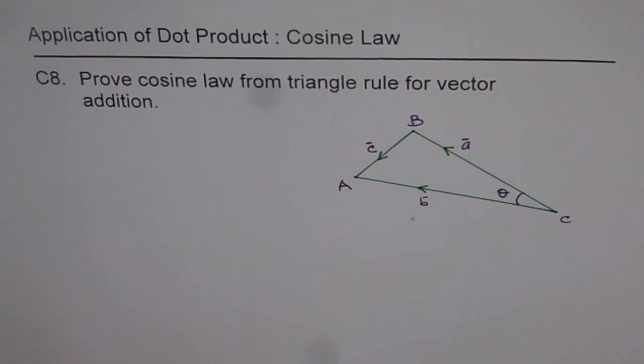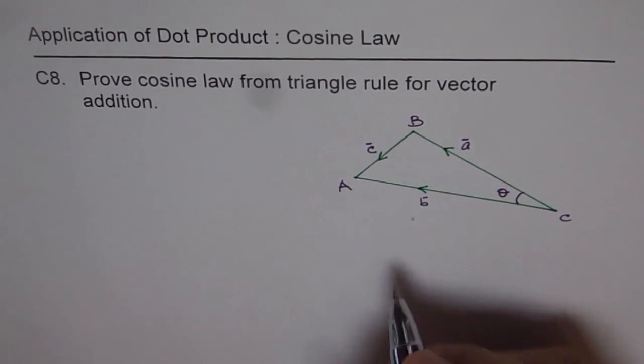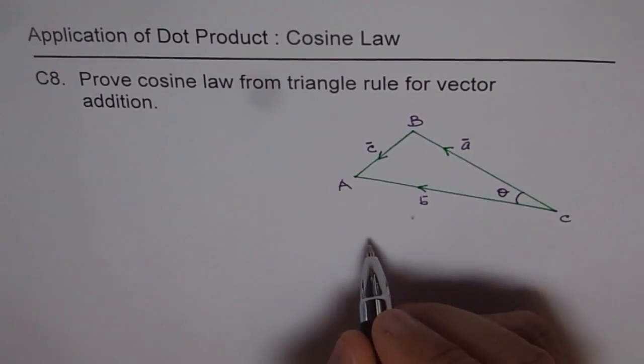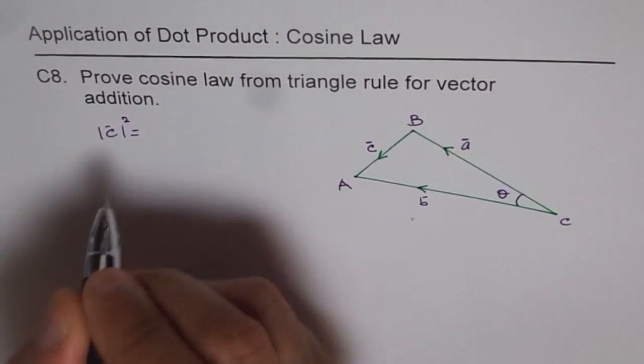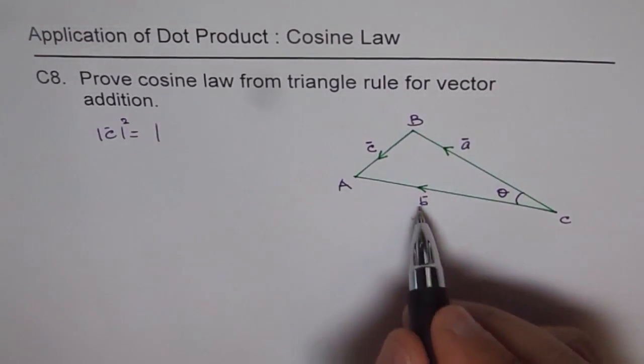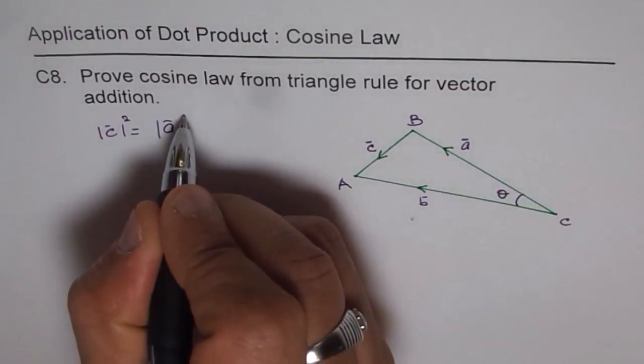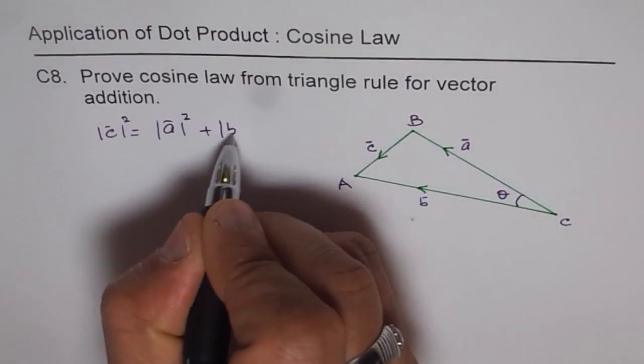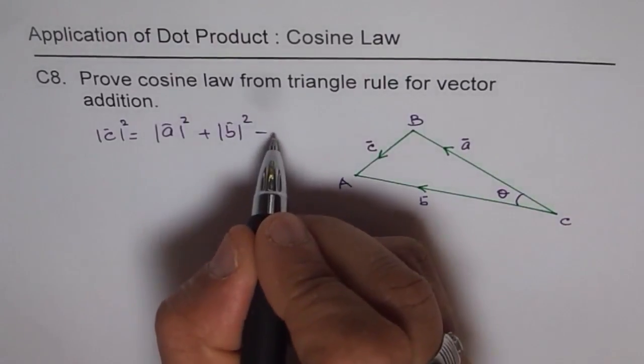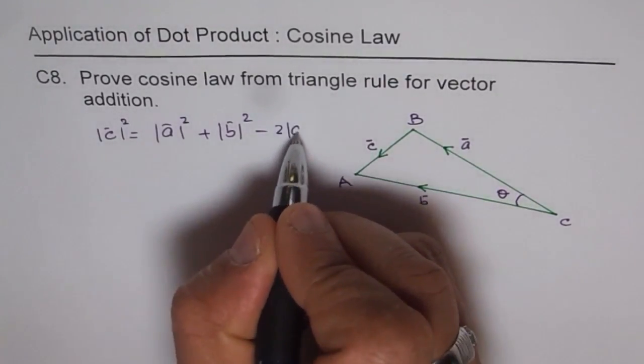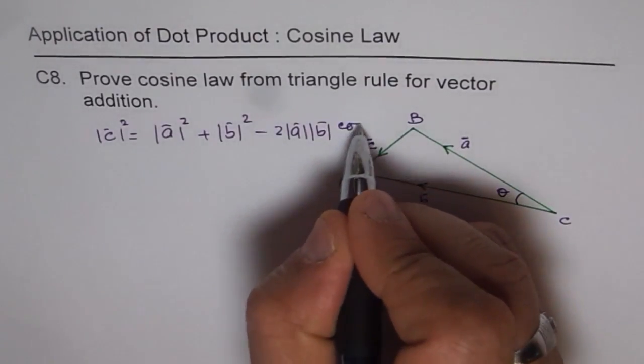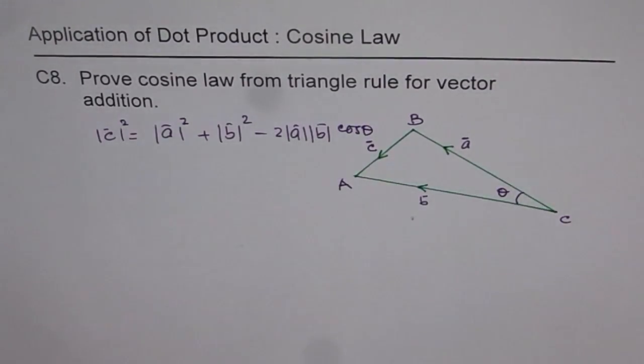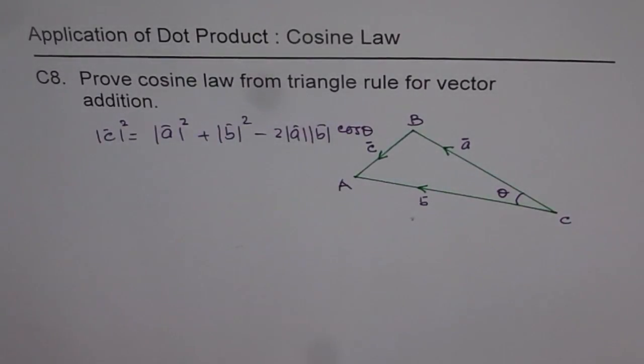Now to do that, let me write down cosine law clearly here first. So we want to prove that this C square magnitude is equal to magnitude of these two vectors, that is A square plus B square minus 2 times magnitude of AB times cosine of theta. This is cosine law. Now we need to prove this cosine law with the help of vector addition.